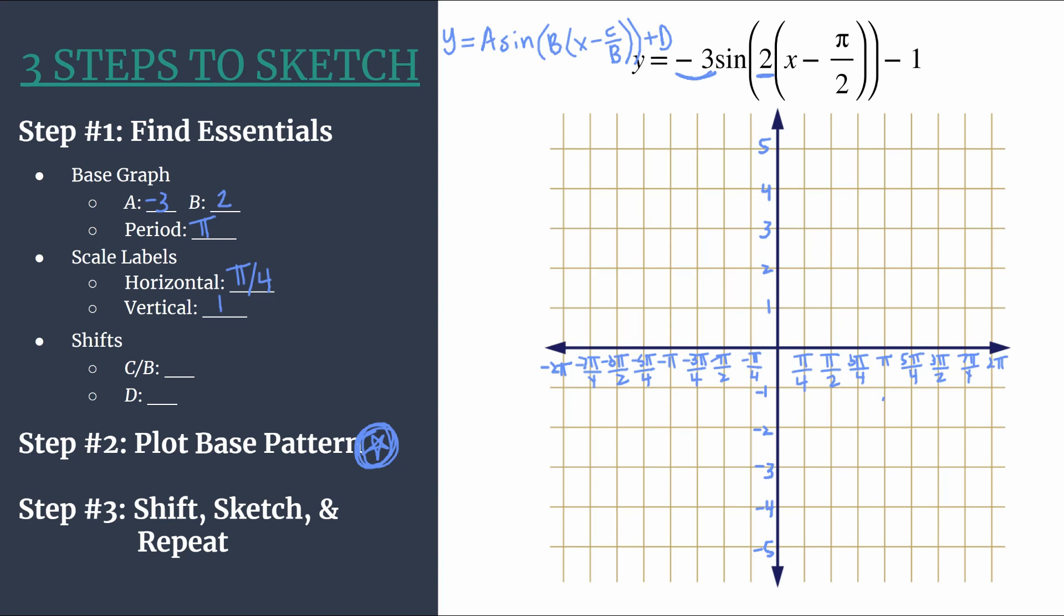And this is nice and easy because we have already factored out the b term from our equation. So we see here x minus π over two. Our c over b term or our phase shift term is just π over two, which means we'll be moving right by π over two units. And then our d is negative one, which means that we'll be shifting vertically down one unit to get our final graph.